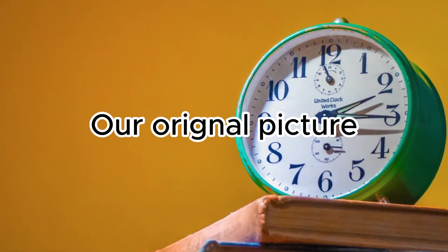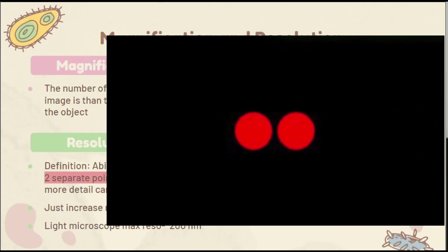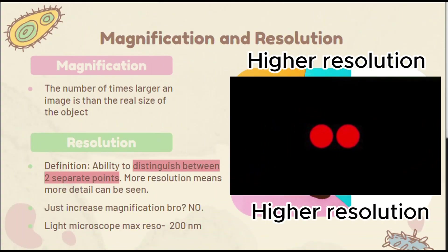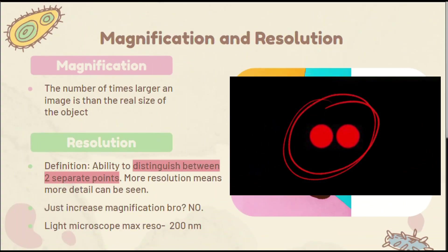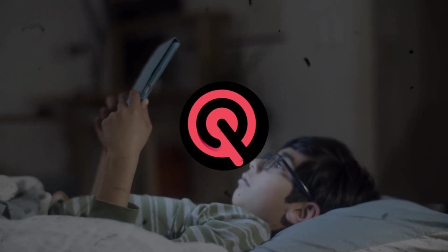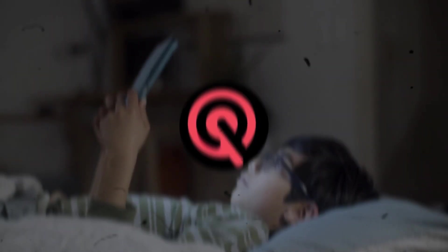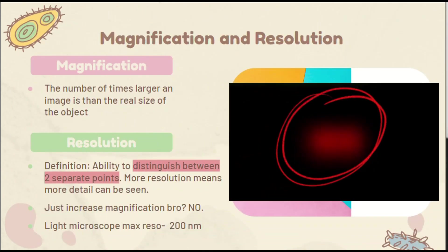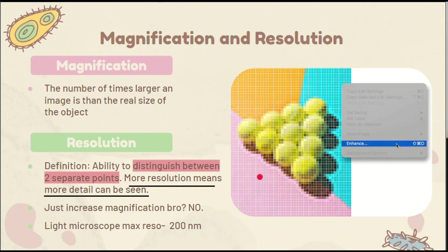Let's go back to our original picture. In the much clearer image, or more appropriately, one with a higher resolution, we can see the two dots as separate. But what happens the moment we stream with terrible internet and lower resolution? The two dots we could distinguish as two now look like one singular dot. Higher resolution means a clear image, and we're able to distinguish between the two close but separate points.